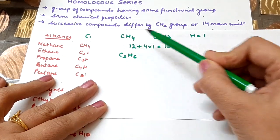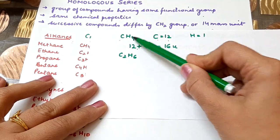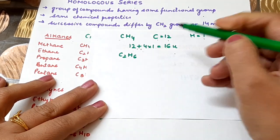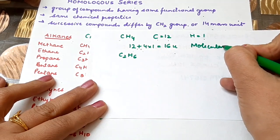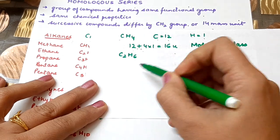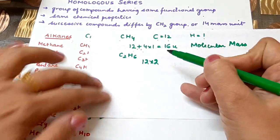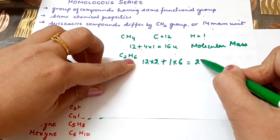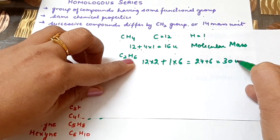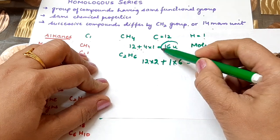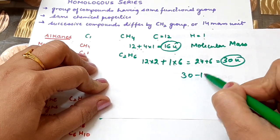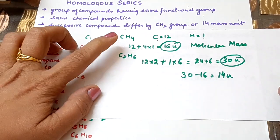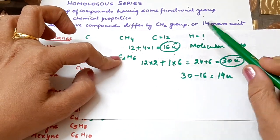Let's calculate for CH4 first: carbon is 12, and there are 4 hydrogen atoms, so 12 + (4×1) = 16 u. That is the molecular mass of methane. Now for C2H6: (12×2) + (1×6) = 24 + 6 = 30 u. The difference between these two is 30 − 16 = 14 mass units. So the molecular mass difference of successive compounds is 14 u.